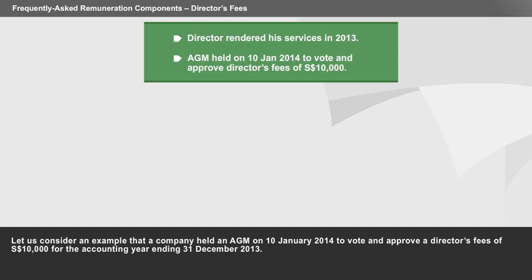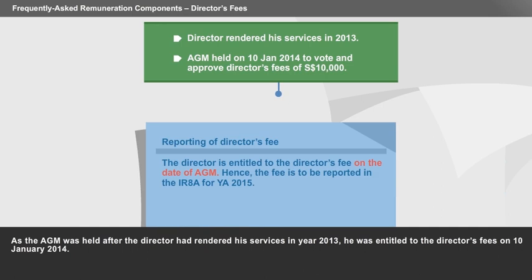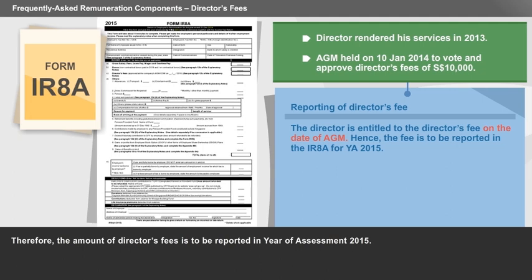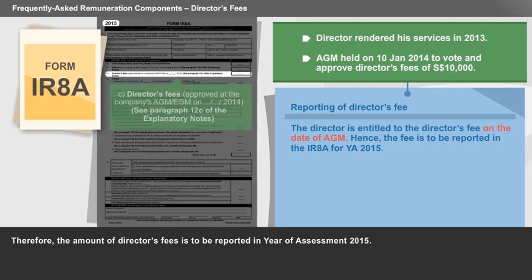Let us consider an example: a company held an AGM on 10th January 2014 to vote and approve director's fees of $10,000 for the accounting year ending 31st December 2013. As the AGM was held after the director had rendered his services in year 2013, he was entitled to the director's fees on 10th January 2014. Therefore, the amount of director's fees is to be reported in year of assessment 2015.